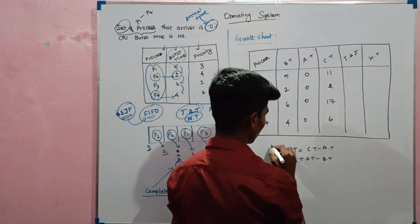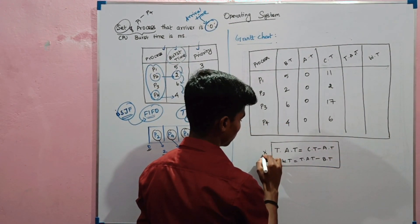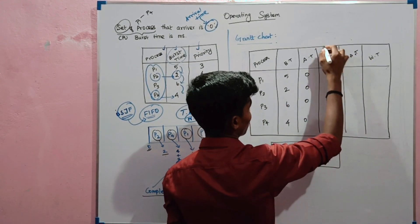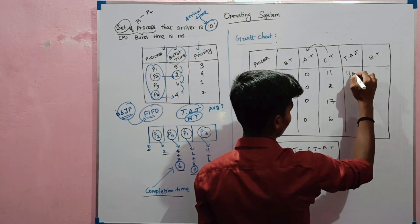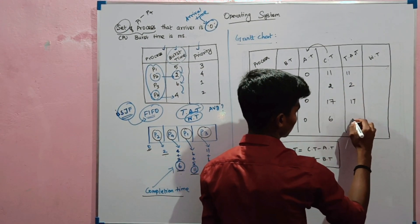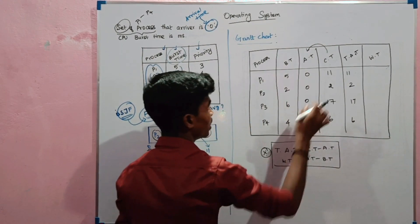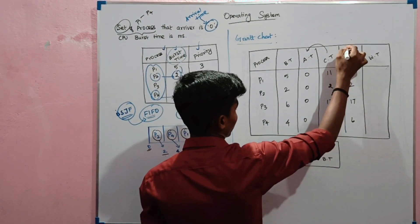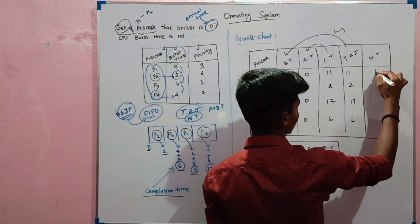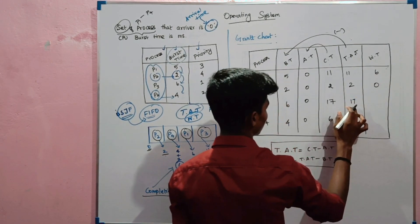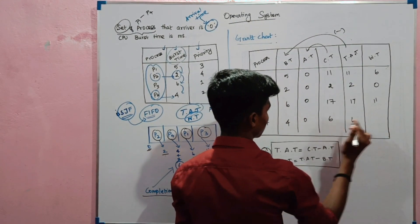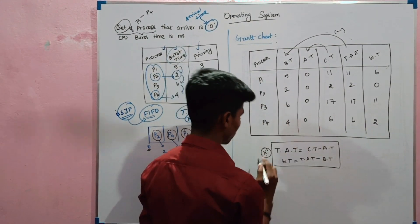Now we calculate. Turnaround time: CT minus AT. For P2: 2 minus 0 = 2. For P4: 6 minus 0 = 6. For P1: 11 minus 0 = 11. For P3: 17 minus 0 = 17. Waiting time: TAT minus BT. P1: 11 minus 5 = 6. P2: 2 minus 2 = 0. P3: 17 minus 6 = 11. P4: 6 minus 4 = 2.